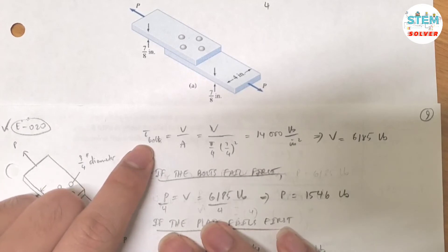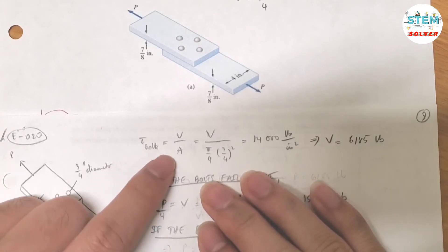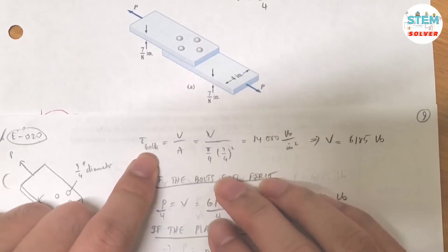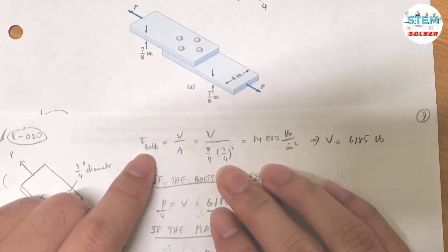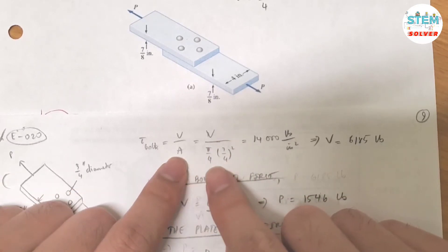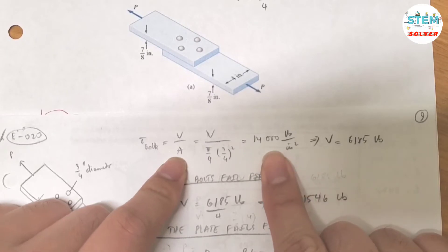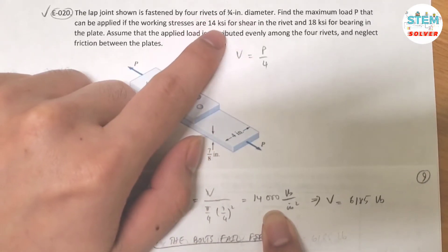You are given the shear of the bolt. I will call it the bolt or the rivet, it's up to you. So the shear stress is equal to the shear force divided by the area of the bolt. The area of the bolt is π/4 times (3/4)² because it's a circular bolt. That equals the maximum shear stress which is 14,000 KSI.